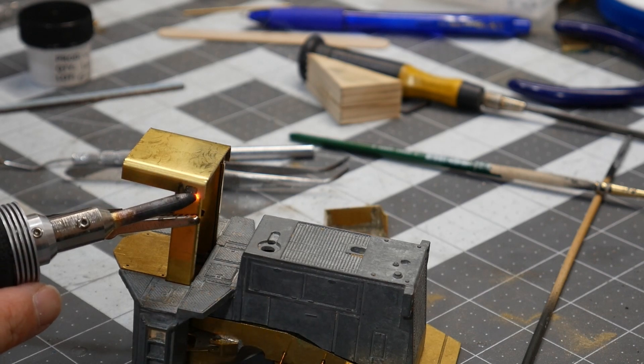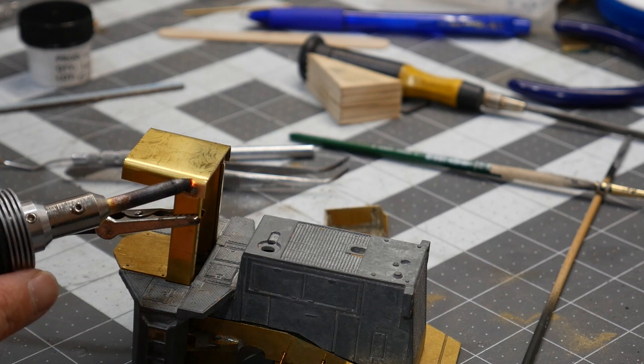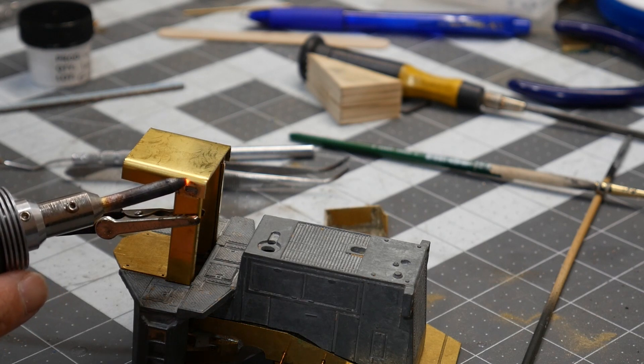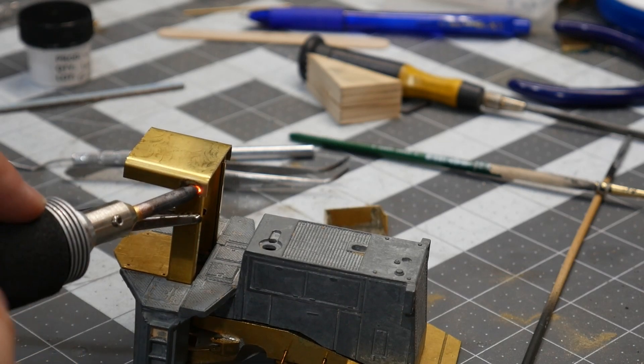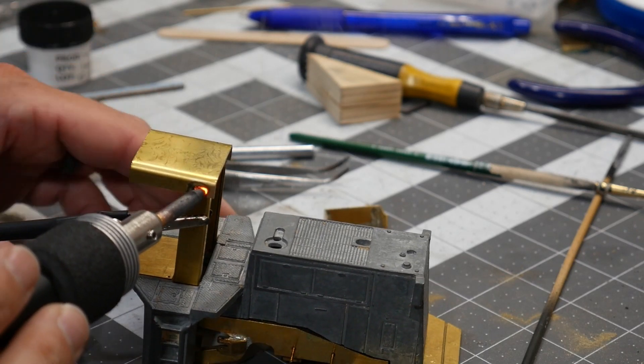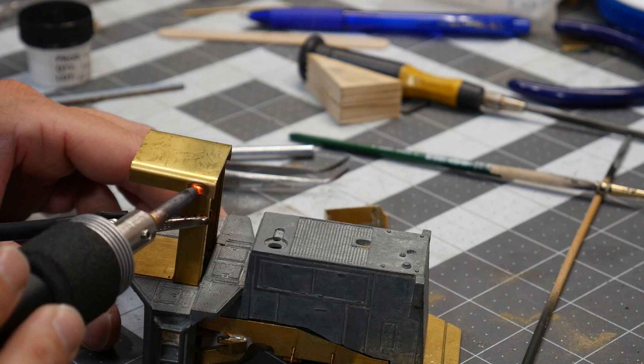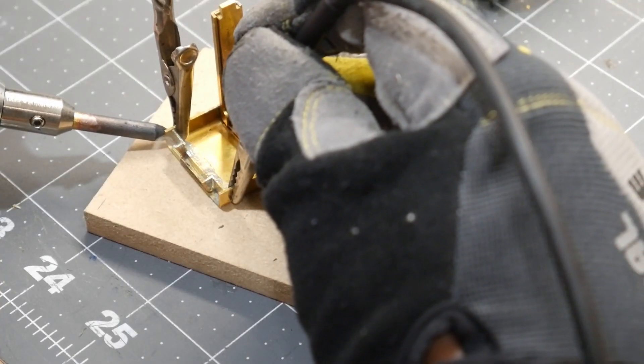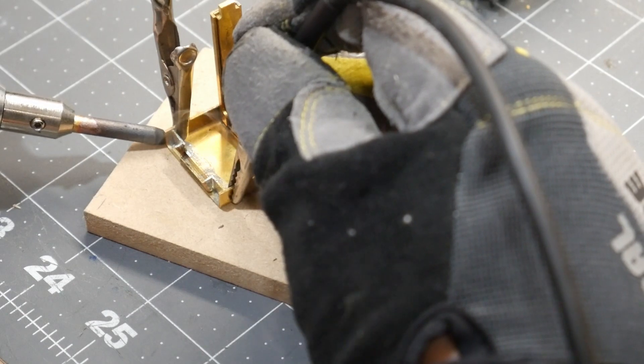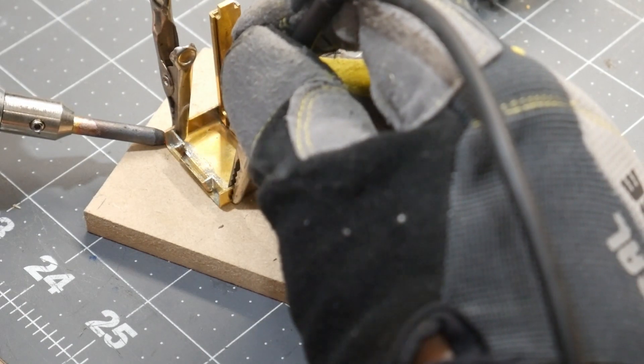You can see the tip of this thing gets pretty red hot. That conducts quite a bit of electricity to get the two pieces of metal hot enough to melt the solder. When it starts smoking the flux, it melts the solder shortly after and that's when you know you've got a good bond.